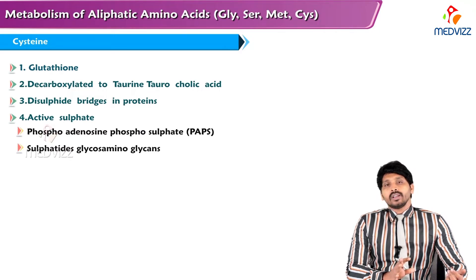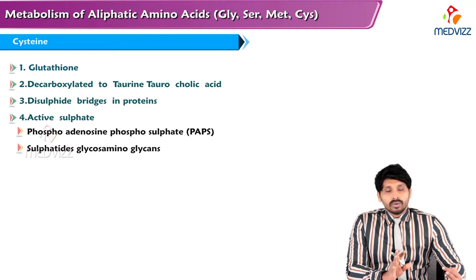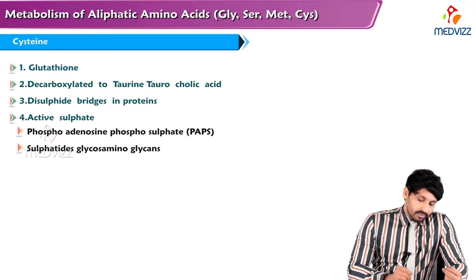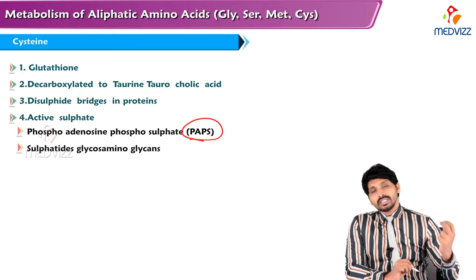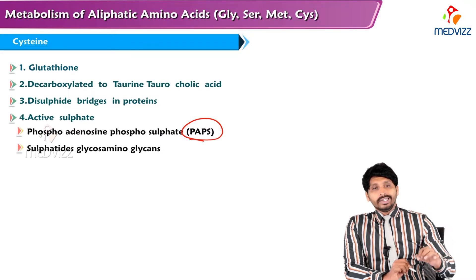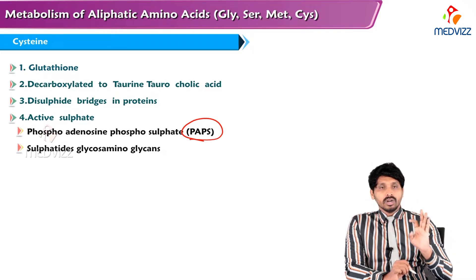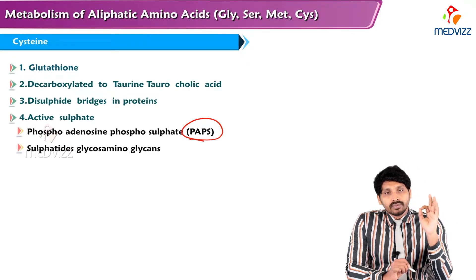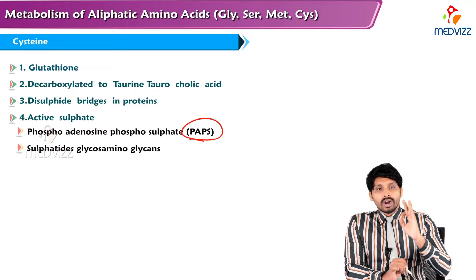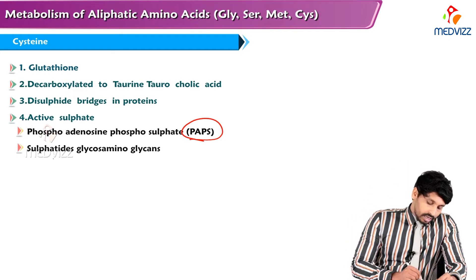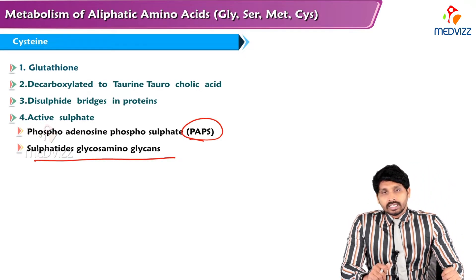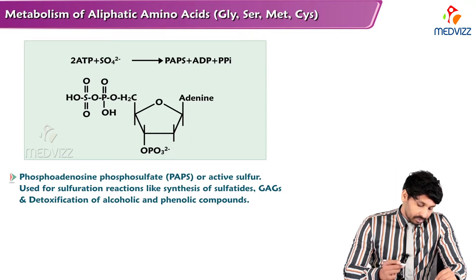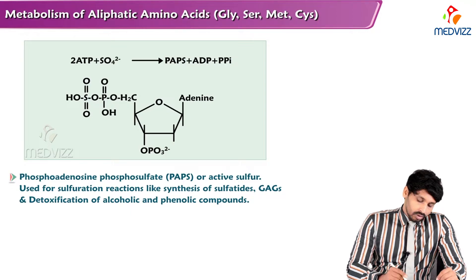Cysteine, having a free sulfhydryl group, is involved in making secondary, tertiary, and quaternary protein structures via disulfide bridges. Active sulfate: just as methionine is the donor of the methyl group — the methyl donor in our body being SAM — the sulfur donor in our body is PAPS (phosphoadenosine phosphosulfate), and cysteine is the sulfur donor for making sulfatides and glycosaminoglycans.